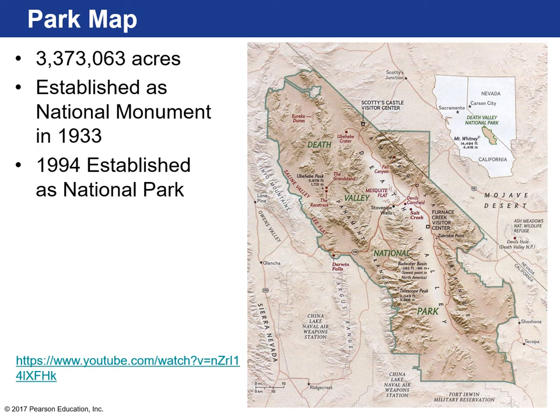The park is huge — three million acres — right on the California-Nevada state line, behind the Sierra Nevadas. Death Valley was established as a national monument in 1933 and was later established as a national park. There's a video that serves as an intro to the park showing really beautiful places you can visit.